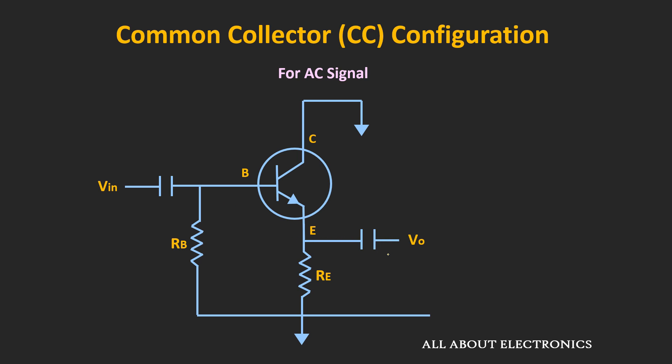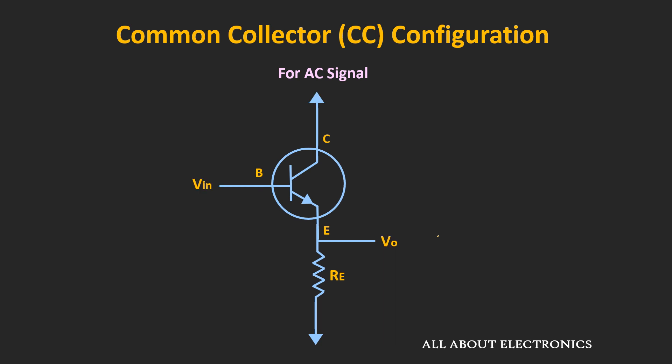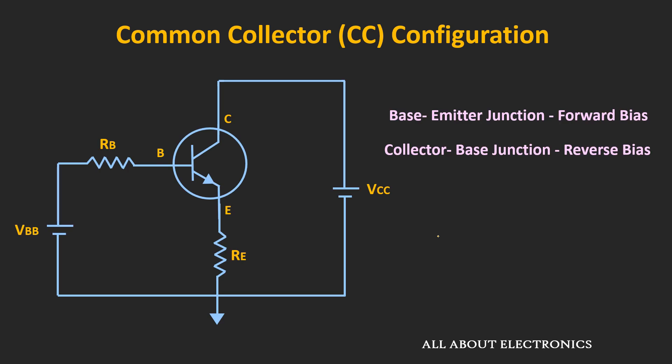If required, the load can be connected at the output. For simplicity, if we neglect the base resistor and the coupling capacitors, the equivalent circuit for the AC signal would look like this. For the DC perspective, this is how the biasing voltages are applied.